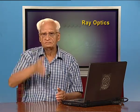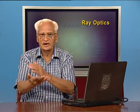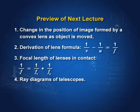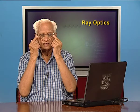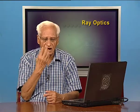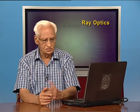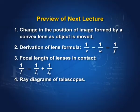We shall re-derive the lens formula by considering the lens as a thin device and comparing triangles geometrically. We shall also show that if two lenses are placed next to each other, the focal length of the combination satisfies 1 by F equals 1 by F 1 plus 1 by F 2. In spectacles, the lenses are almost in contact with the eye lens, so the powers add up. We shall also study optical devices like telescopes and microscopes in subsequent lectures.